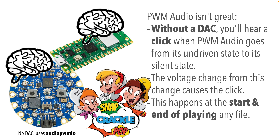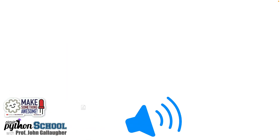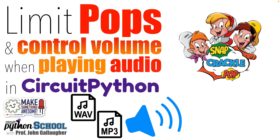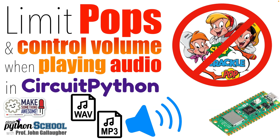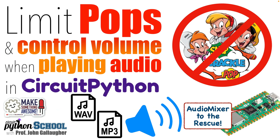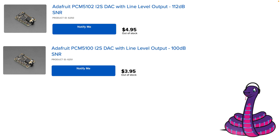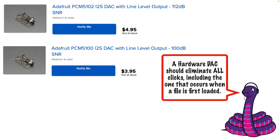A voltage change causes the click, and that happens at the start and end of playing any audio file. In an earlier lesson, I showed you how you can eliminate these clicks and pops by using an all-software approach with the CircuitPython audio mixer library. But adding the low cost DAC hardware I'm about to show you does an even better job of eliminating all clicks, including the one that occurs when the audio mixer first starts.